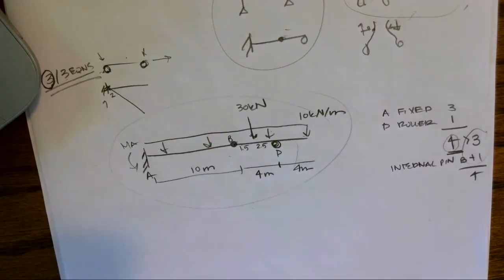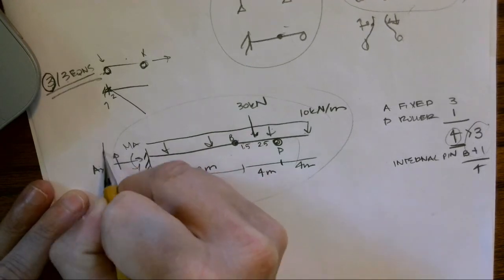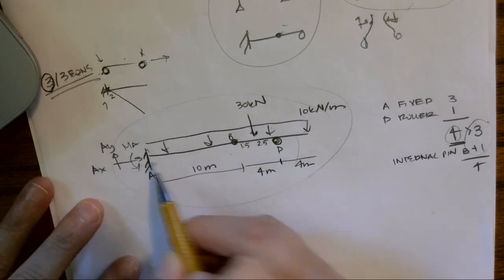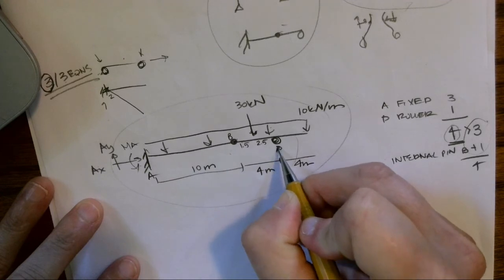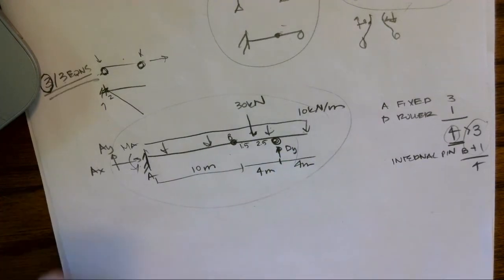If I sum moments anywhere, I have to include that unknown moment at A. At A, which is fixed, I could have an X component, I could have a Y component, and I could have a moment. Here at D, because it's a roller, I can only have that vertical component because that's perpendicular to my surface.